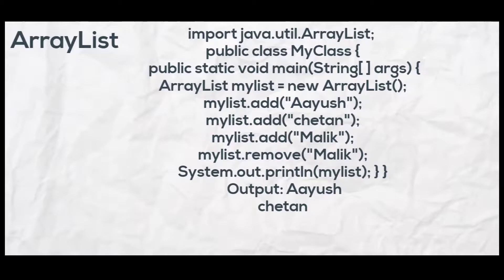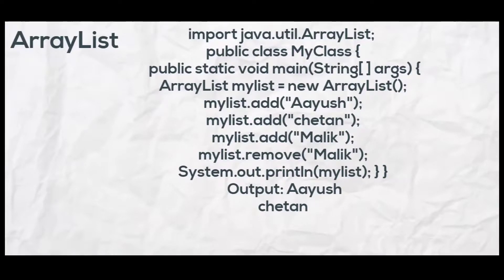When an object is removed, the ArrayList may shrink in size. In the example program of ArrayList, we have imported ArrayList from the utility package. In our main method of the class, we have created the object of ArrayList. The add method adds a new object to the ArrayList, and conversely the remove method removes the object from the current ArrayList. We call the add method using the reference object of ArrayList.